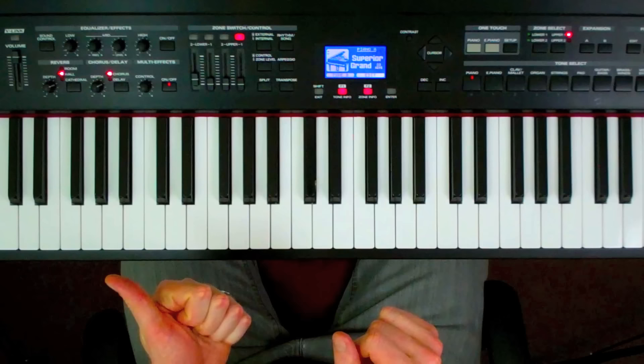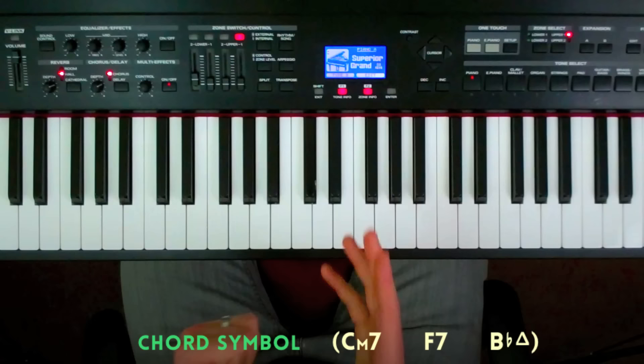So when I'm deciding which chord voicing to use I'm looking at two things. I'm looking at what the chord symbol is in the chord sheet. So it might be C minor 7, F dominant 7, B flat major 7, and then I'm also looking at the melody note.